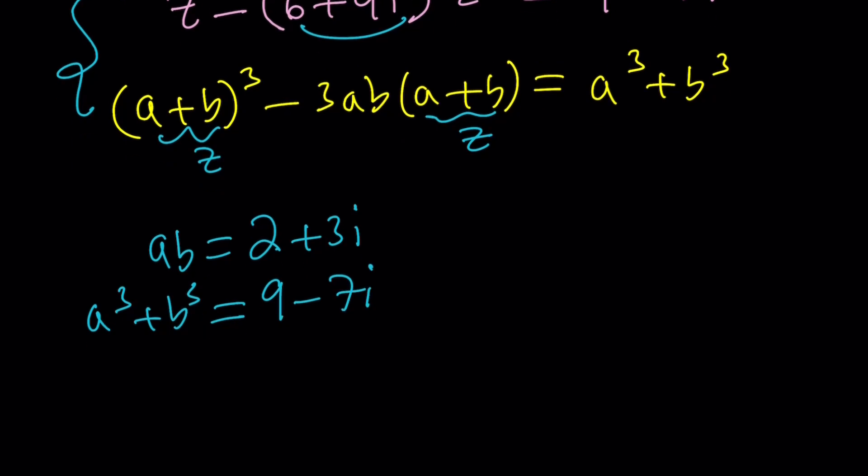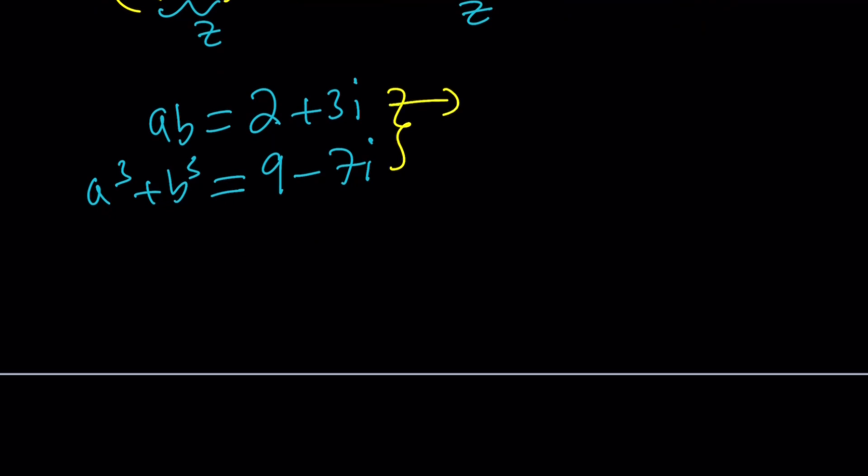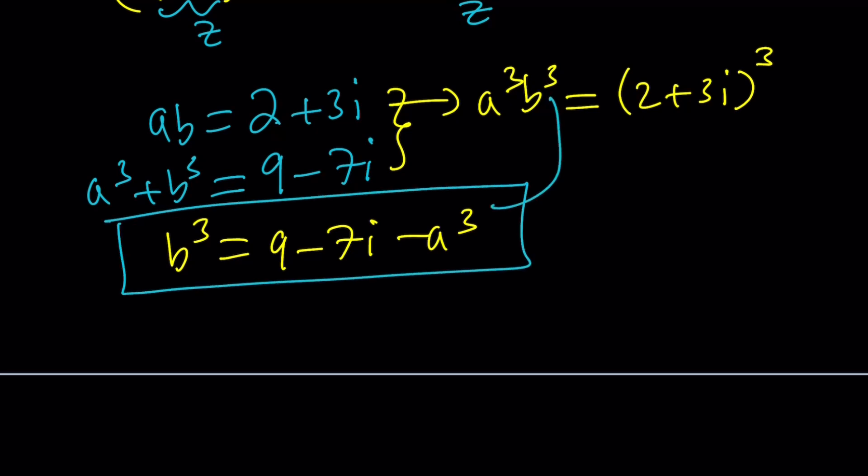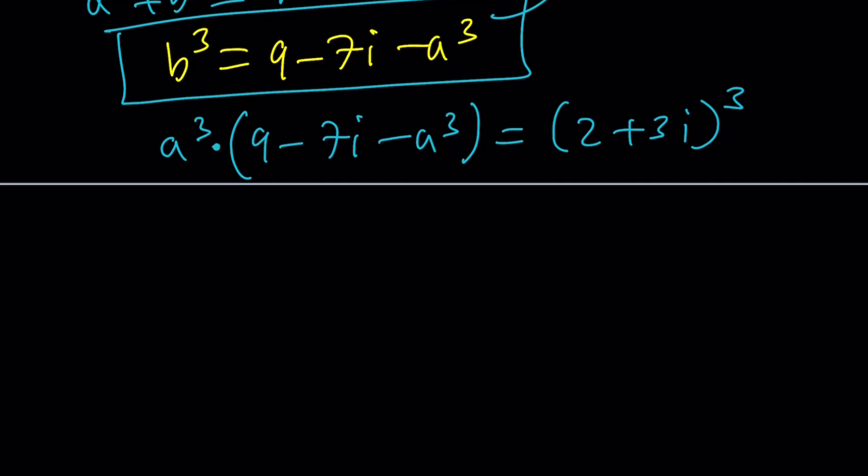Now here's how we can solve this system. This looks cubic, but it's actually quadratic. If you cube both sides, we've got to cube a complex number, but it's not super bad. I can isolate b³ from here, write it as 9-7i-a³, and plug this in. That gives me a³ times 9-7i-a³ equals (2+3i)³. Now a³ multiplied by a³ gives us a⁶. You don't want that. Let's call this c. Now we get a quadratic because c times c is c². Solve it. Good luck with that. But that's way too much work. So that's not a very good idea.